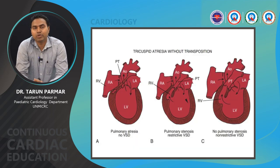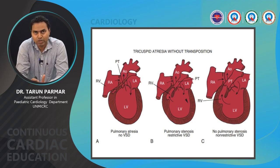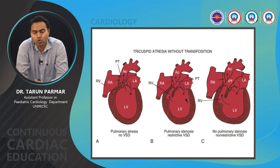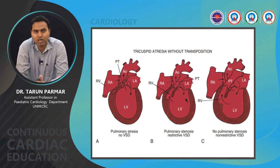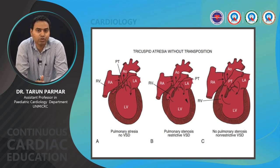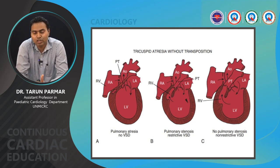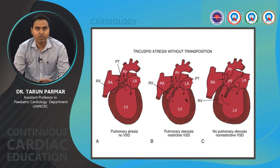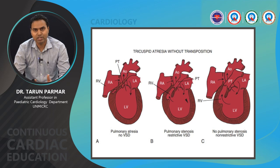This is a cartoon representation of tricuspid atresia without transposition — the NRGA situation — showing subtypes A, B, and C. In Type A, there is an intact ventricular septum and no VSD, so the RV is very rudimentary because no blood flows through it. The pulmonary arteries are therefore very diminutive. In Type B, there is a restrictive VSD or stenosis at the infundibular or pulmonary valvular level; pulmonary arteries may be well-formed or hypoplastic. In Type 1C, a large VSD leads to well-development of the trabecular RV and the pulmonary arteries — an increased QP situation.